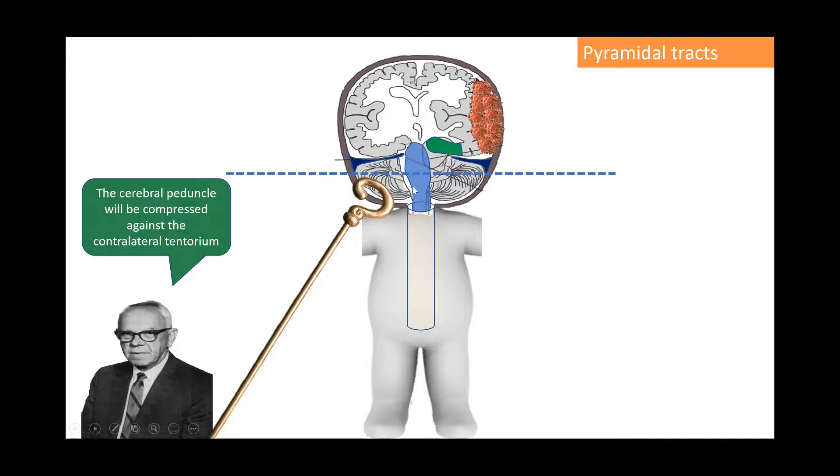highlighted in blue. This is the brain stem and highlighted in dark blue. This is the tentorium. So this patient has a brain tumor and this will lead to an uncus herniation, highlighted in green. And this uncus herniation here will compress the brain stem and this spot here, that is the cerebral peduncle, will be compressed against the contralateral tentorium.